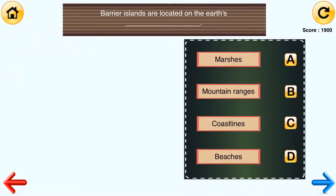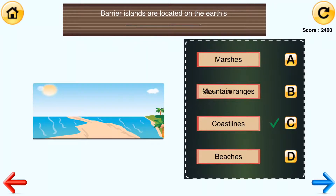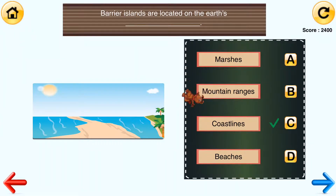Quiz question: Barrier islands are located on the earth's blank. The answer choices are marshes, mountain ranges, coastlines, and beaches. The correct answer is coastlines.